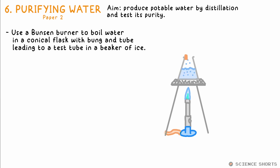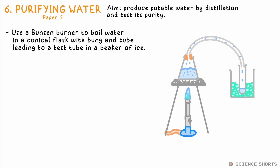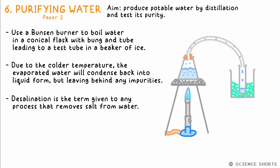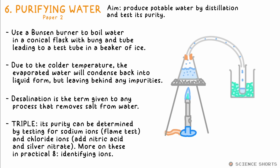Chem 6: water purification. We distill water to leave pure water. Distilled water is considered potable — that is, drinkable — although that goes for any water with low enough levels of salt and microbes. We heat the water in a conical flask or round-bottom flask with a tube going through a condenser or just to a beaker of ice; the colder temperature re-condenses the water back into a liquid. Remember that removing salt from water through any method is called desalination. For triple, you also need to use your knowledge of flame and precipitate tests to identify metal and non-metal ions, in particular sodium and chloride ions — explained in Practical 8.